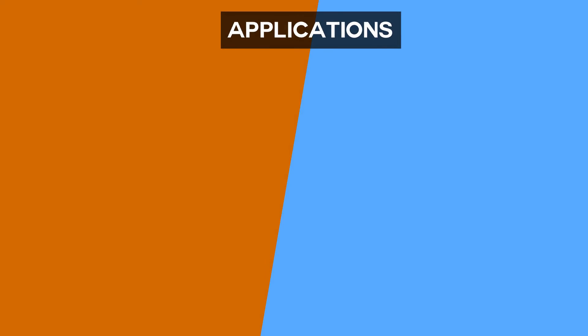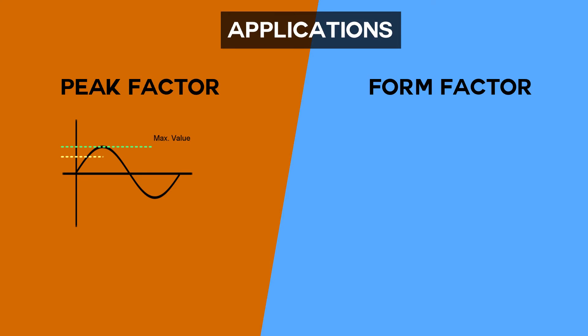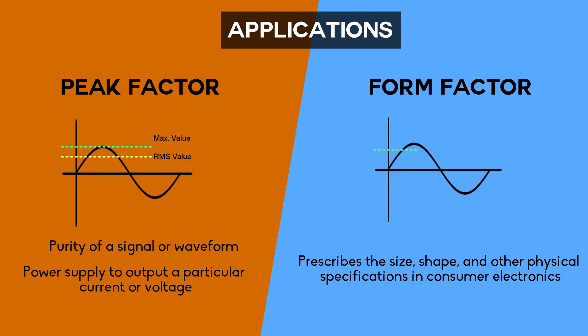Looking at the applications of these two factors, peak factor indicates the extreme peaks of a waveform and specifies the properties of electrical systems such as purity of a signal or waveform, the capability of system such as power supply to output a particular current or voltage. Form factor prescribes the size, shape, and other physical specifications of components, particularly in consumer electronics and electronic packaging. A form factor may represent a broad class of similarly sized components.